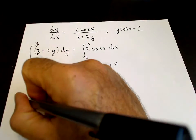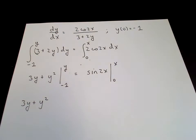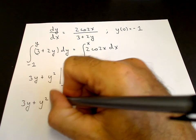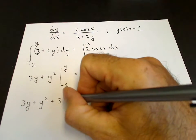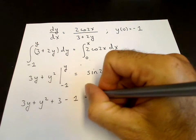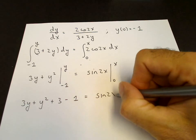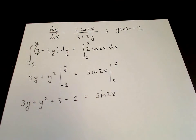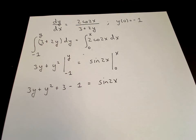Therefore, we have 3y plus y squared from the upper limit minus minus 3 plus 3 minus minus 1 squared minus 1 equals sin2x minus sin0. Sin0 is 0. And we end up then with an algebraic equation for y.